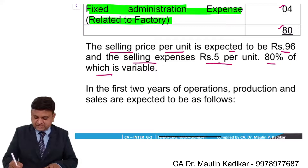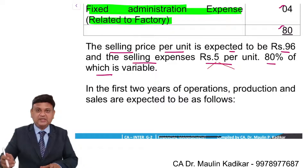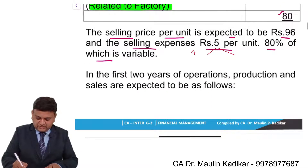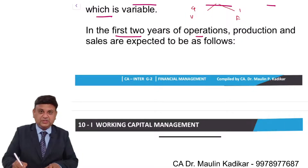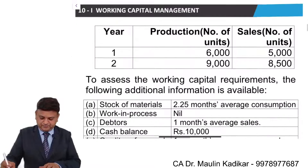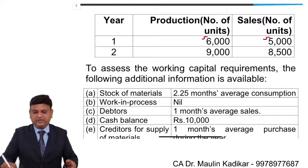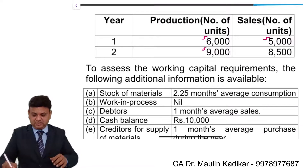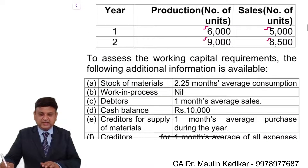This 5 rupees is divided into two parts. 5 into 80% comes to 4, so 4 rupees is variable and 1 rupee is fixed. In the first two years of operation, production and sales are expected to be as follows: production will be 6,000 in the first year and sales will be 5,000. Production will be 9,000 in the second year and sales 8,500.